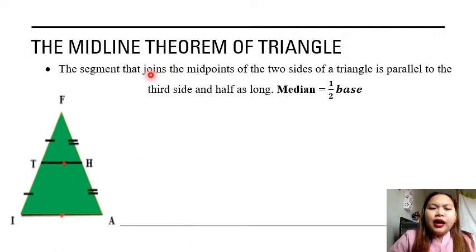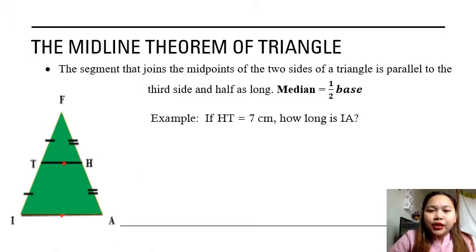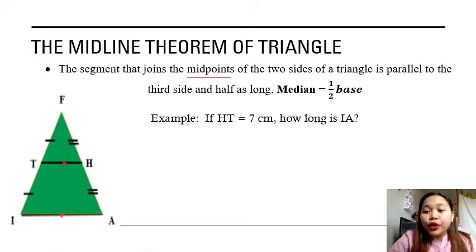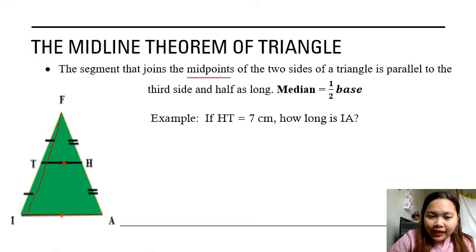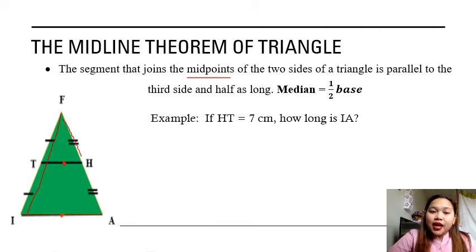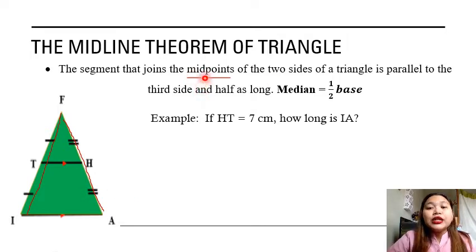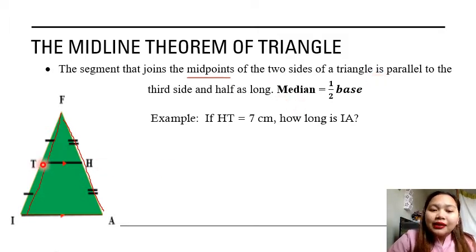We need to have the midpoints. When we say midpoint, that is the center point of the leg. To show the center point of the leg, you just need to divide this leg into two equal parts — divide it by two — and the center point will be your midpoint. Same as the other side. After getting the midpoints of the two legs of our triangle, connecting the two midpoints of the two legs will be your median.